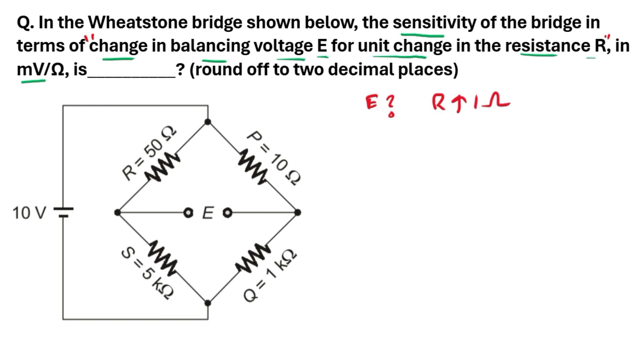That means resistance R is already given as 50 ohms. When the resistor is 51 ohm, we need to find out the output voltage E. That is the question. Now let's solve the problem.